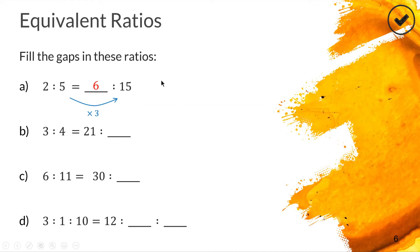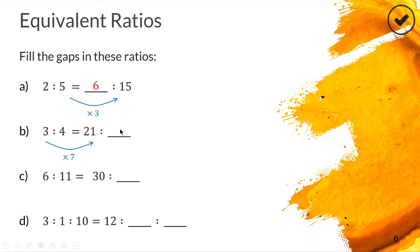For question b, we have three to four equals 21 to something. Three is turning into 21, so what times three gives 21? The answer is seven. So we multiply the other part by seven: four times seven gives us 28. For question c, the matching parts are six and 30. What number multiplies six to get 30? That's five. So we multiply 11 by five to fill in the gap and get 55.